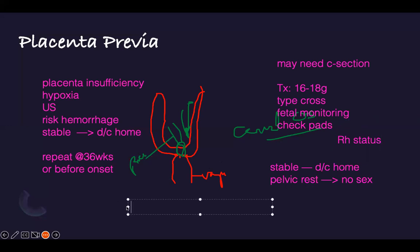One more important point: for placenta previa, no vaginal exams — especially for previa. Because of where the placenta is, if you put your hand in, you are poking the placenta, which is a problem. That is why they should have pelvic rest — any trauma there will become a problem.